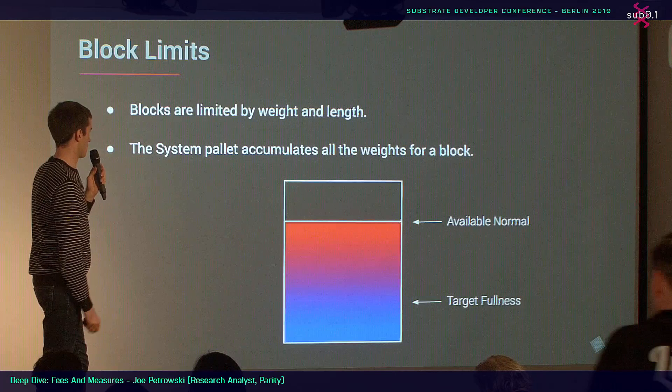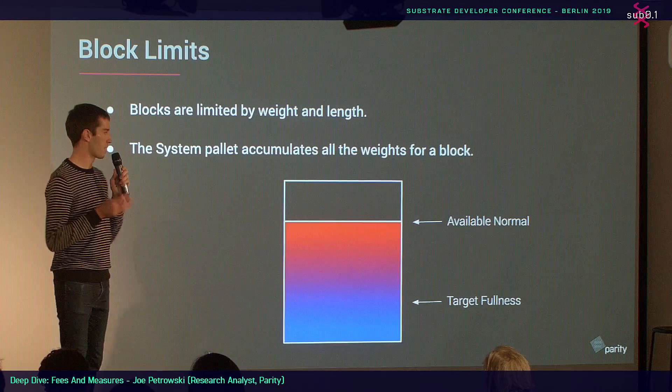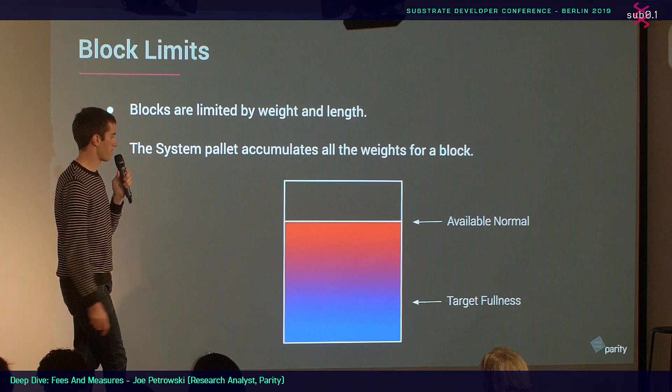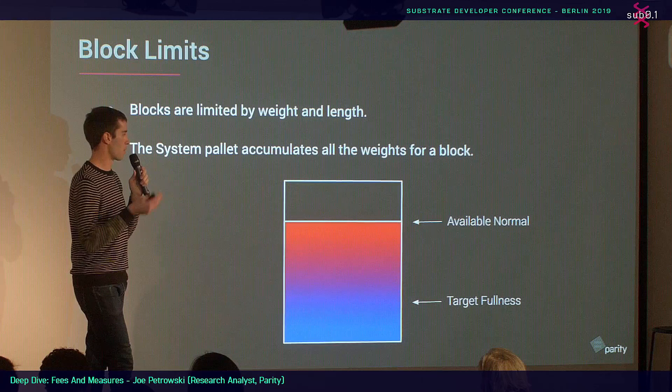Blocks are limited by fullness — by weight and by length. The system pallet accumulates all the weights for a block and also adds up all the encoded transaction lengths. In Polkadot, we target 25% fullness, and 75% is the maximum weight for a block for normal operations. Operational transactions can go up to the maximum, so 25% of the block is always reserved for the operational class.